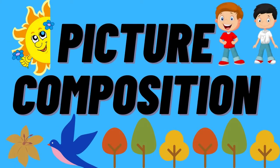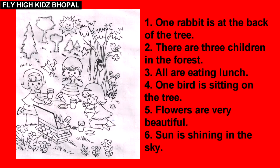Hello dear students, today we are learning picture composition. On the screen you have to see one picture and write five sentences about it. So let's start. One rabbit is at the back of the tree. There are three children in the forest.